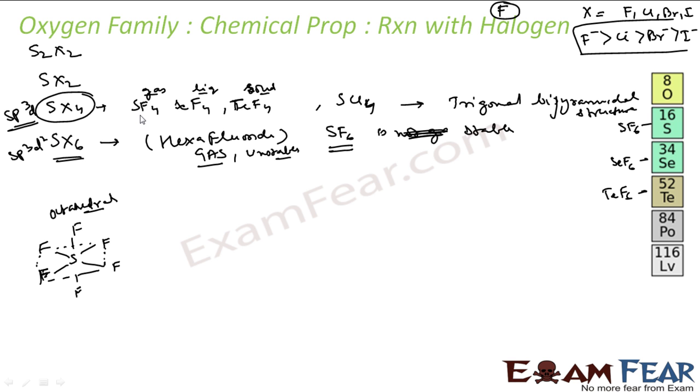So if we talk about my SF4, that is sulfur tetrafluoride, this is prepared by fluorinating sulfur dichloride with sodium fluoride at almost 350 Kelvin. And this is a colorless gas, there is no color to this gas. Very, very reactive. My SF4 is very, very reactive.